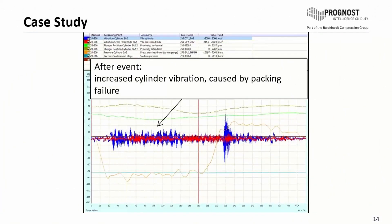After the event, when the hyper compressor was started again, we have increased cylinder vibration which was caused by packing failure. But what we also see is because the temperature was cooler than before, the bathtub effect is gone and we have a smooth movement from the plunger here in brown and green.